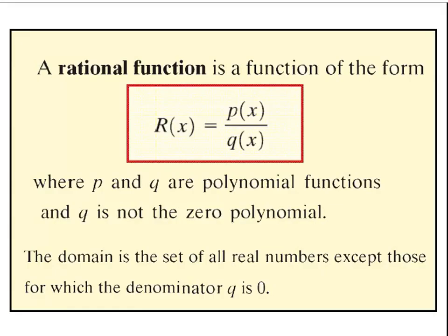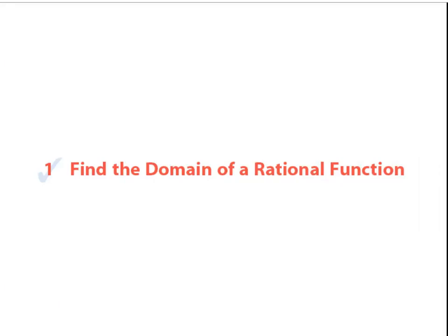The first thing we're going to talk about is the general form of a rational function. Basically, all we're talking about is a fraction where the numerator is a polynomial and the denominator is a polynomial. Together, the division of those two polynomials creates what we call a rational function. We can't have division by 0, so whenever we look at rational functions, we're going to be concerned about where we would have division by 0.